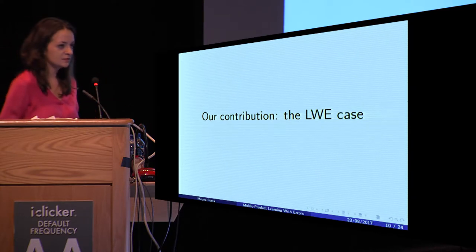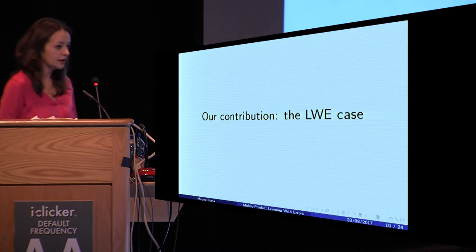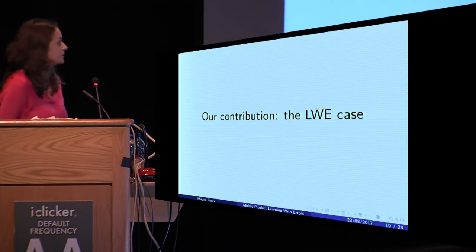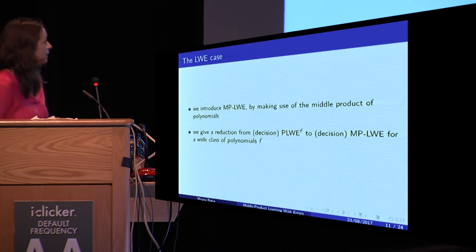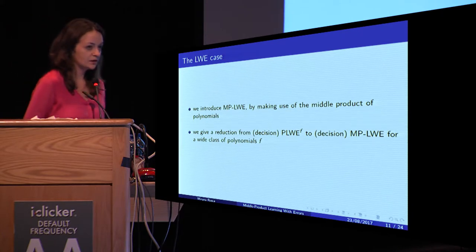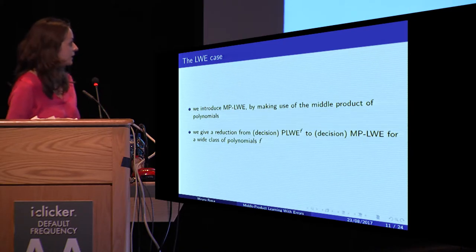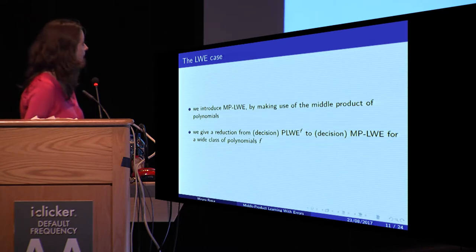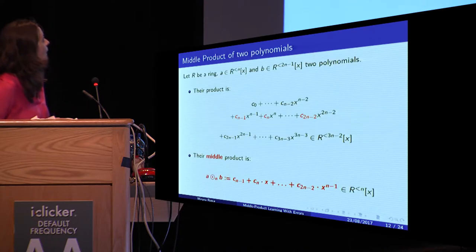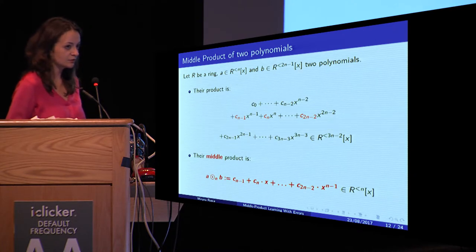The question now is: do we have an analog of this for the LWE case? And the answer is yes. In this paper, we introduce MPLWE by making use of the middle product of two polynomials, and we give a reduction from decision polynomial LWE to decision MPLWE for an exponential class of polynomials F. Now I want to explain how we compute the middle product of two polynomials.